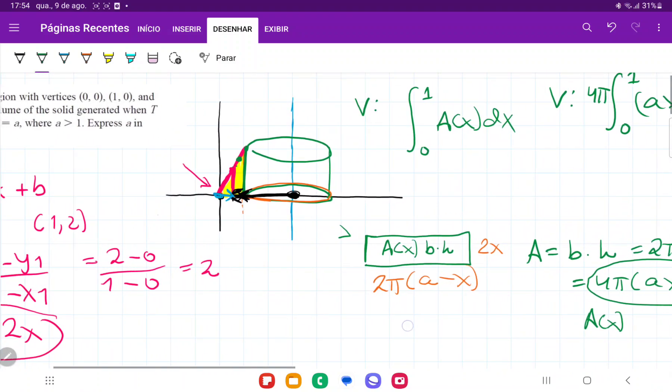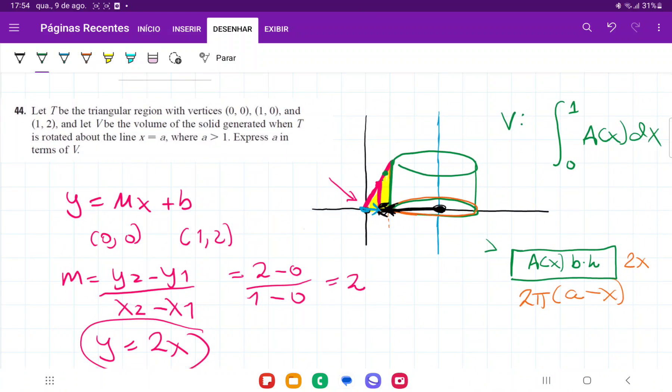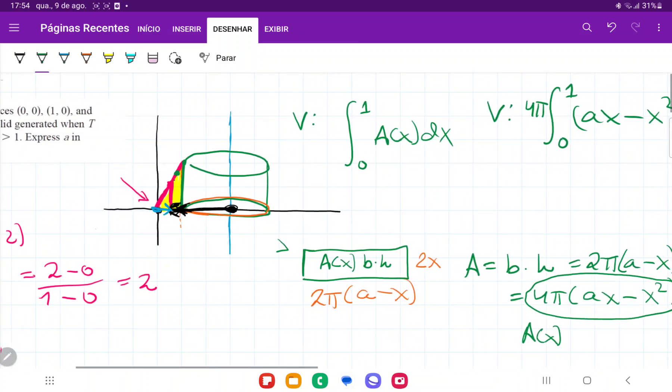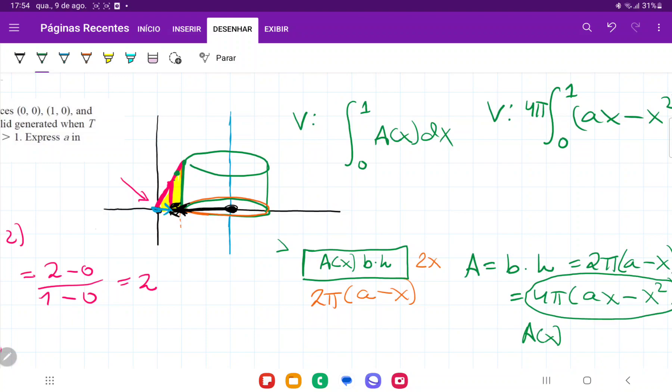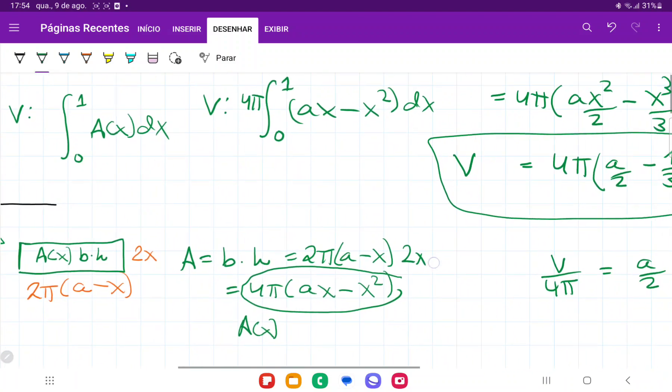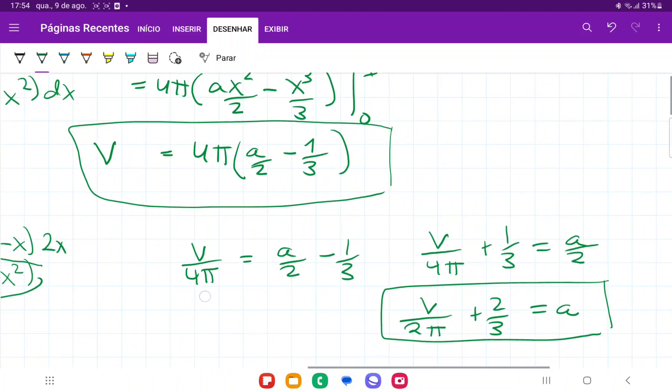So let me just go back so you guys can see the whole process. We basically took this triangular region. We revolved it about the line x equals a. We found that the height is defined by this line that connects (0,0) and (1,2). We unwrapped it, found the area of each of these cylinders, added them up, found the volume, and then lastly we expressed a in terms of the volume.